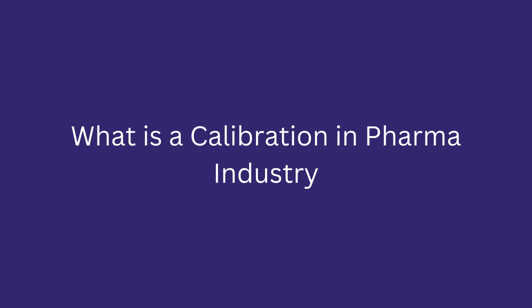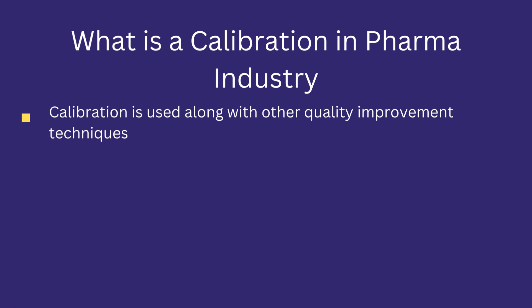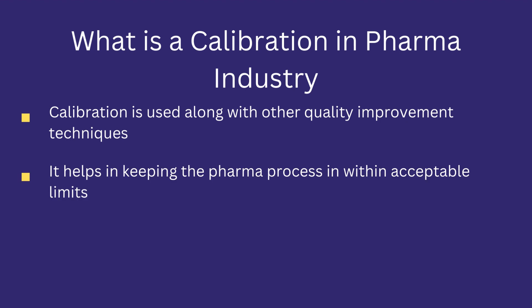Let's discuss calibration in the pharma industry and see how it plays an important role in keeping the manufacturing process within its specified limits and prevents deviation in the specification of the output product. Calibration is used along with other quality improvement techniques. Calibration keeps the output of a measuring instrument within its acceptable limit by detecting uncertainty in the instrument output. Detecting faulty instruments enables maintenance personnel to remove the defect. If it is not possible to remove the defect, the defective instrument is immediately replaced with an instrument having a certain output.